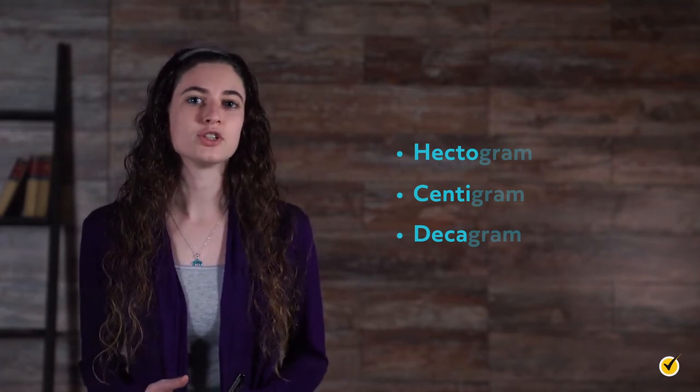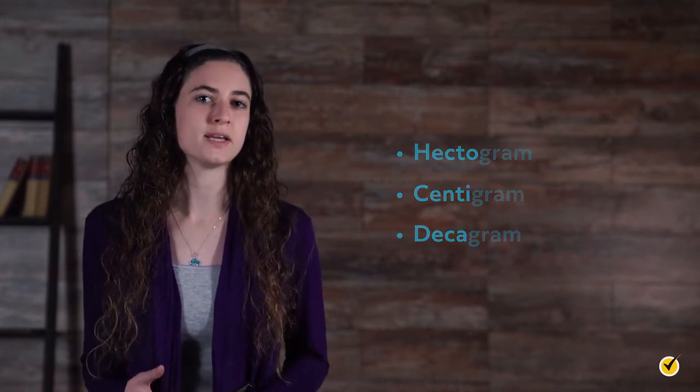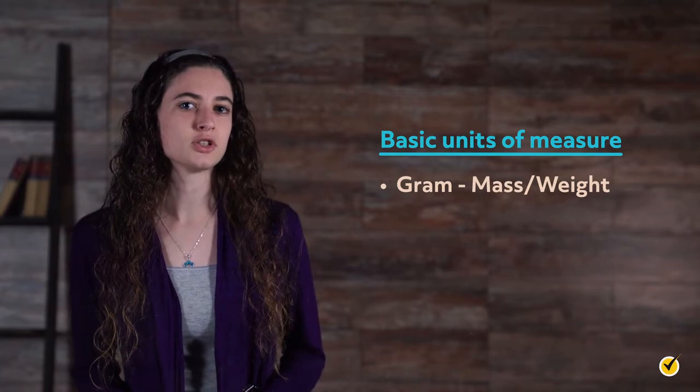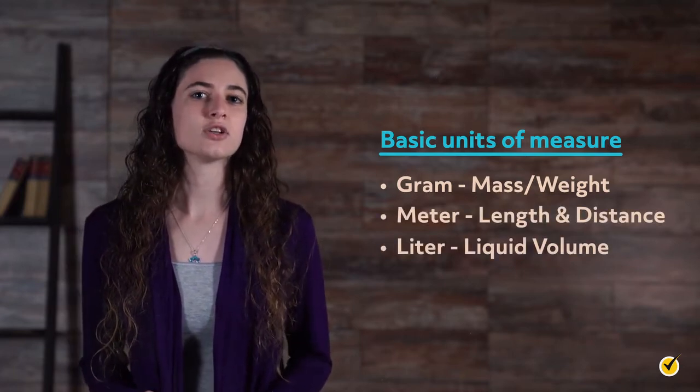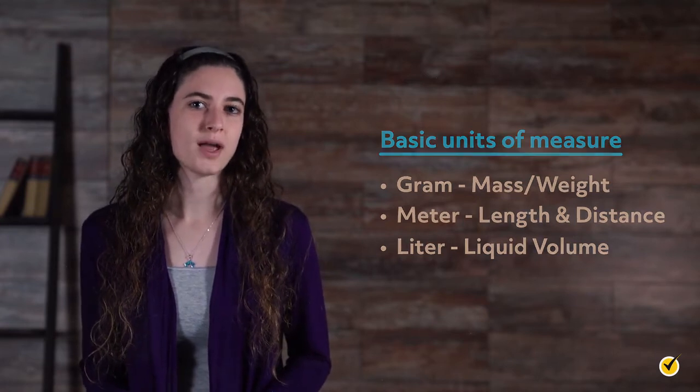The prefix is the information that you need to determine whether the unit is smaller or larger than the basic unit of measure. The other basic units of measure for the metric system are meter, to measure length and distance, and liter, to measure liquid volume. These units are named in a similar way. So once you know the unit that is being measured, understanding the prefix is essential.